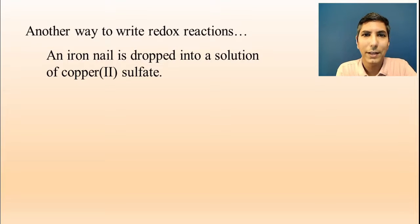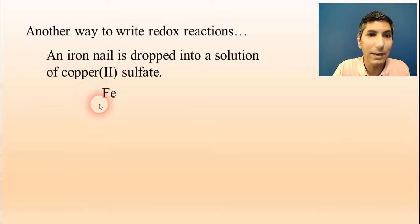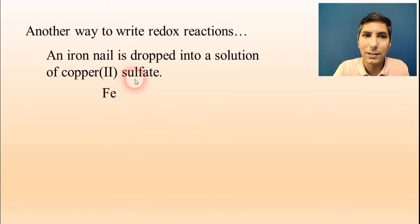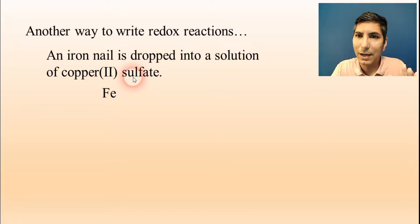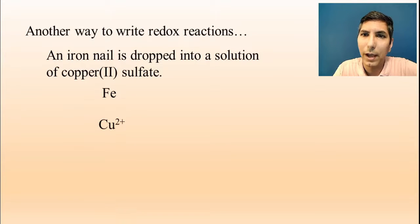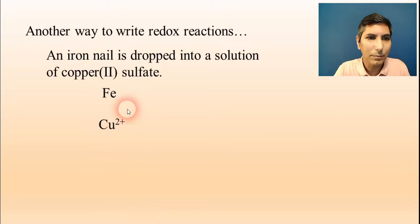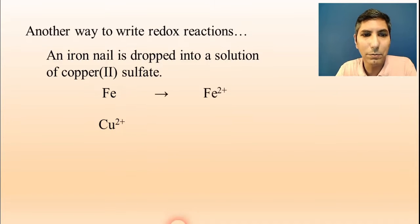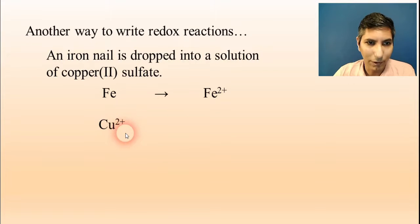An iron nail is dropped into a solution of copper-2-sulfate. The iron nail is written as Fe. For copper-2-sulfate, the sulfate is a spectator ion — we ignore it — and we just write the copper-2 part: Cu2+. Metals react with metal ions, so the iron metal will turn into Fe2+, the most common ionized form of iron in solution. And copper ions will turn into elemental copper, just Cu.